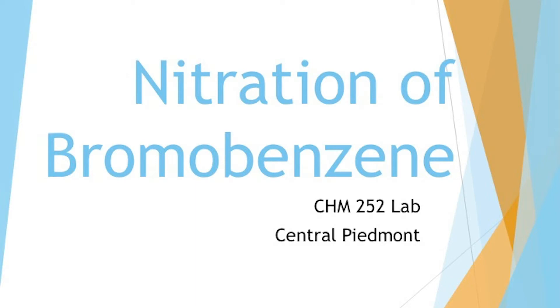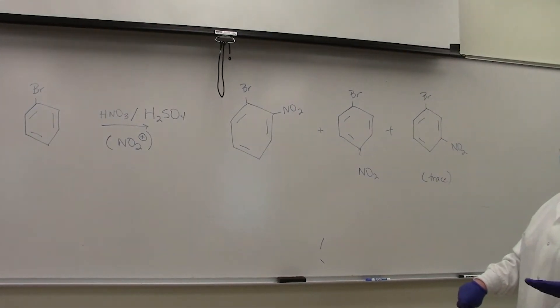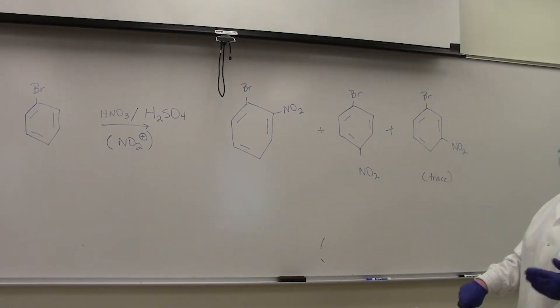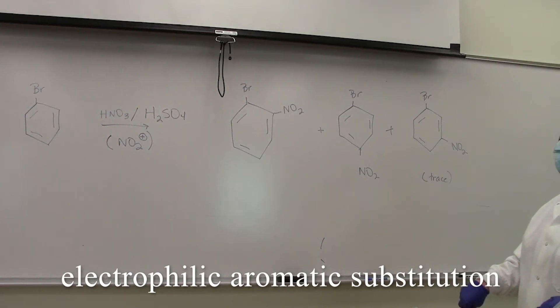Today's lab, we are doing the nitration of bromobenzene. The nitration of bromobenzene is an electrophilic aromatic substitution reaction. You've seen substitution reactions before - the outcome is you substitute one atom for another. What's different than what you've seen previously with different types of organic compounds, such as alkyl halides or alcohols, is that this is an electrophilic aromatic substitution, not nucleophilic.